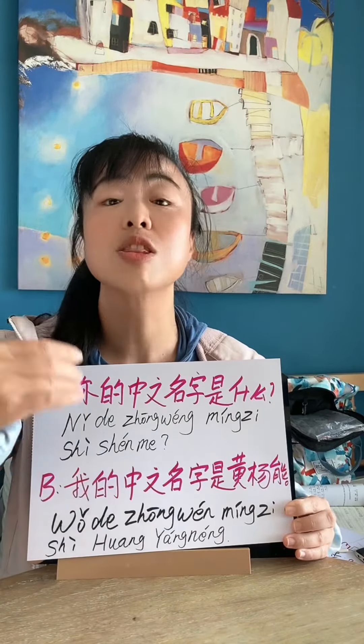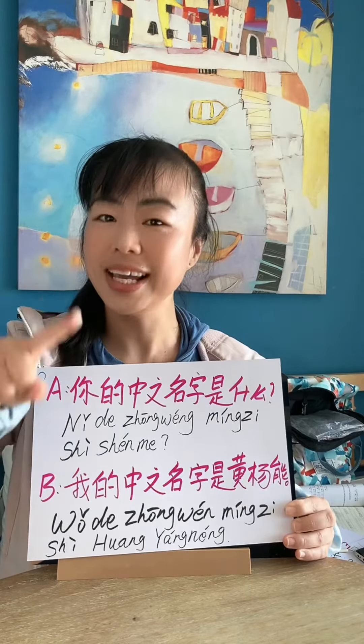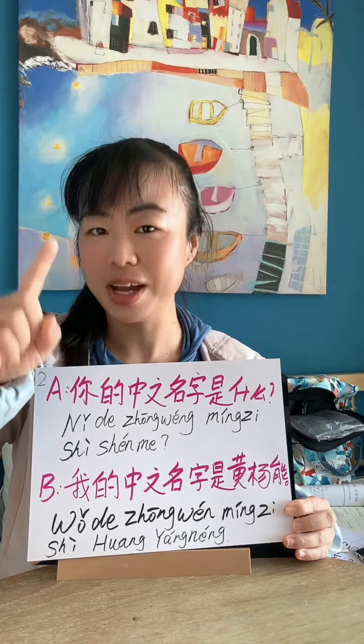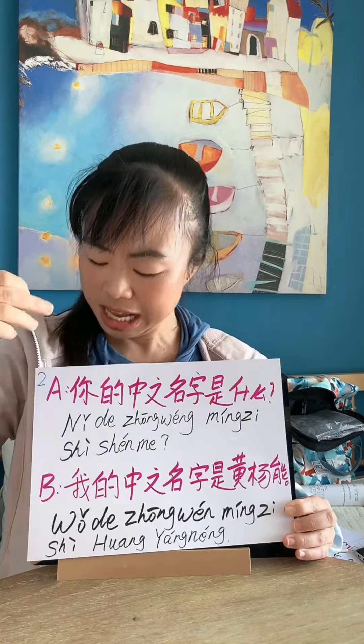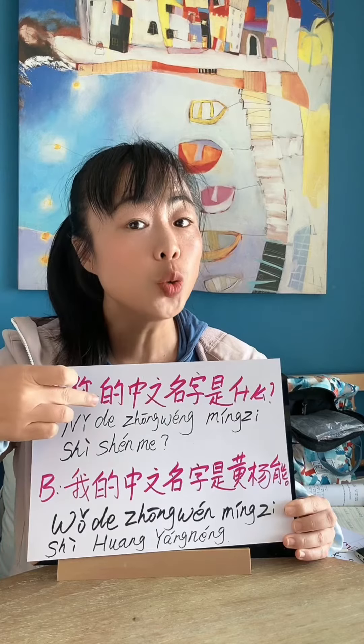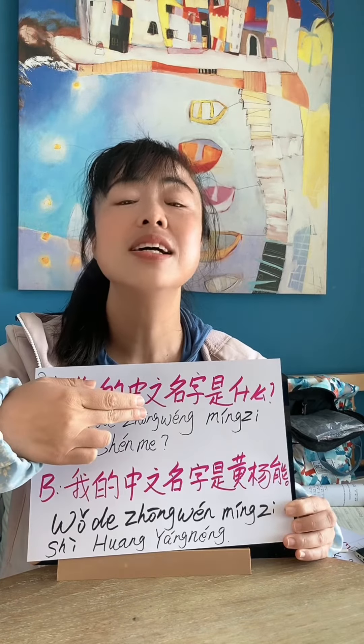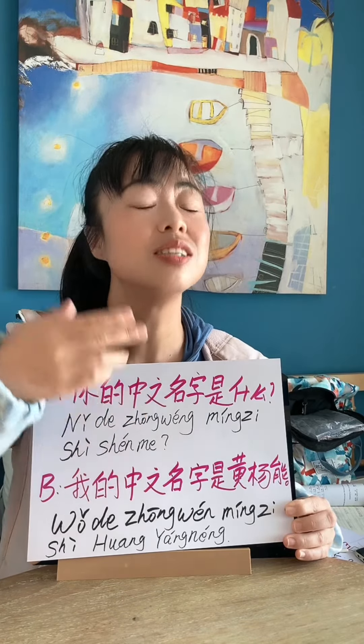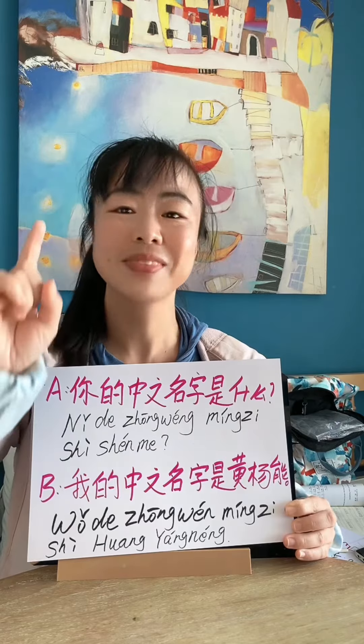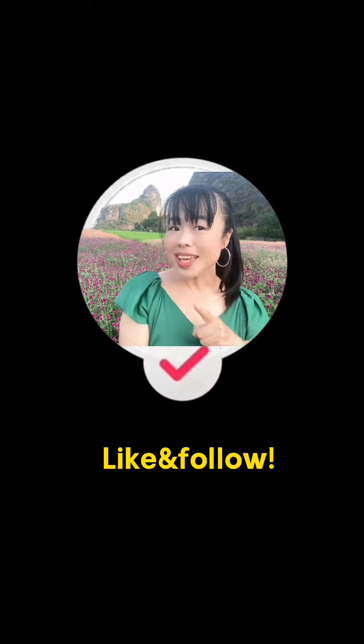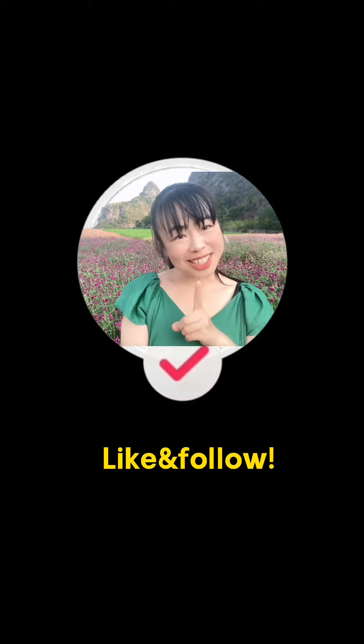我的中文名字是黄阳能. Now you can replace my Chinese name with your Chinese name if you have one. Answer my questions in the comment area — 你的中文名字是什么? Follow me and learn Chinese!